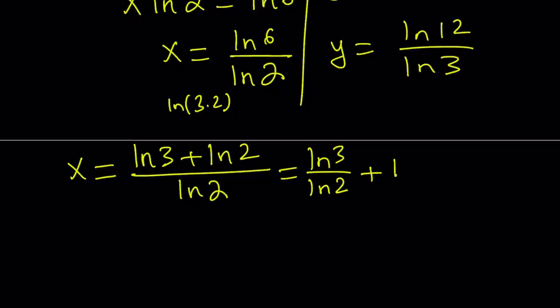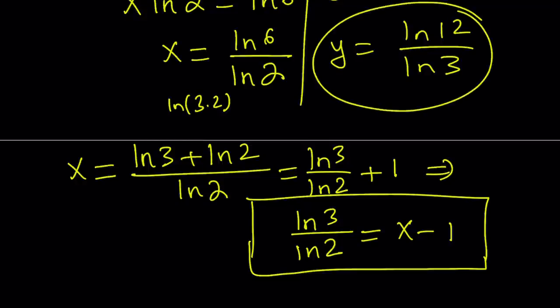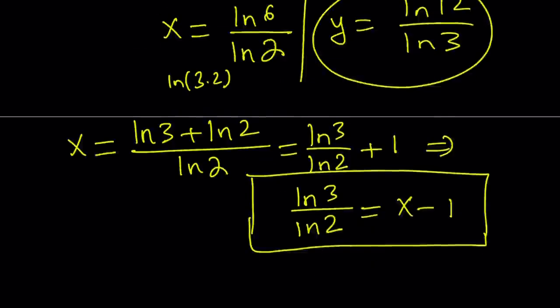which is 1. Awesome. And from here, what I can do is I can isolate ln 3 over ln 2 and write it as x minus 1. Now, it is important to be able to express a logarithmic expression in terms of x because we do need to substitute that into y so we can find y in terms of x. But first, let's go ahead and work on this expression a little bit so we can make it look like x minus 1.